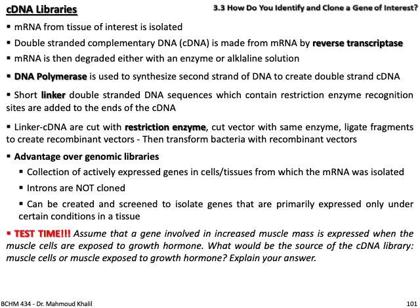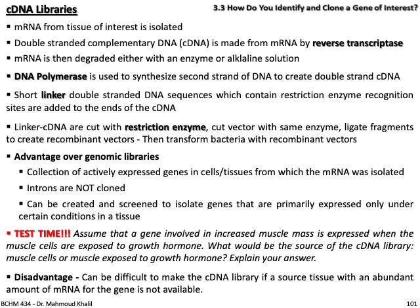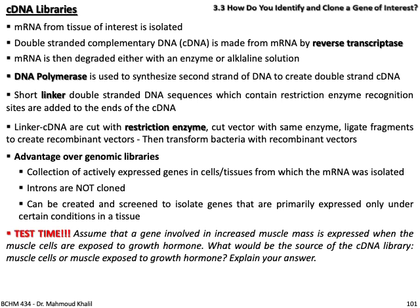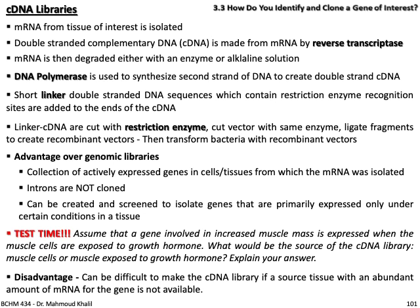Test question: a gene involved in increasing muscle mass is expressed when muscle cells are exposed to growth hormone. What would be the source of the cDNA library — muscle cells, or muscle cells exposed to growth hormone? Explain your answer. Disadvantage of cDNA libraries: it can be difficult to make a cDNA library if the source tissue does not have an abundant amount of mRNA for the gene of interest.